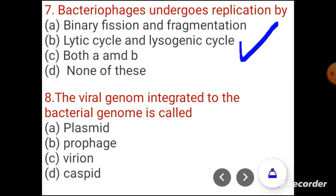Question 8. The viral genome integrated into the bacterial genome is called: Plasmid, Prophage, Virion, or Capsid. The correct answer is Prophage.